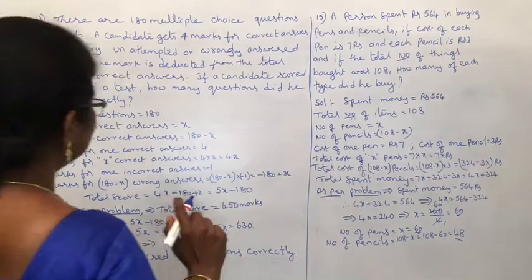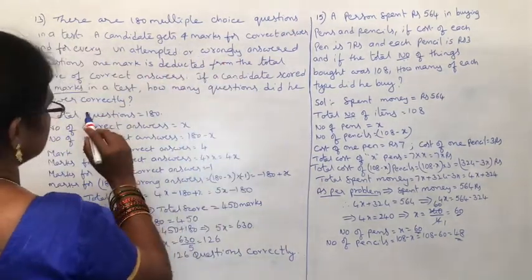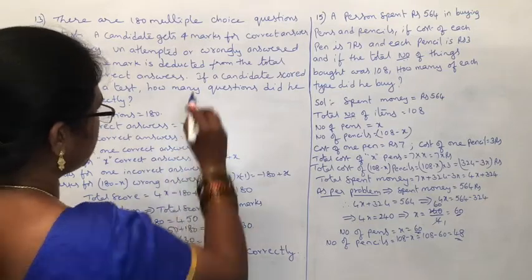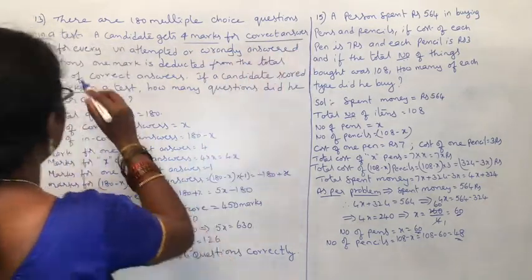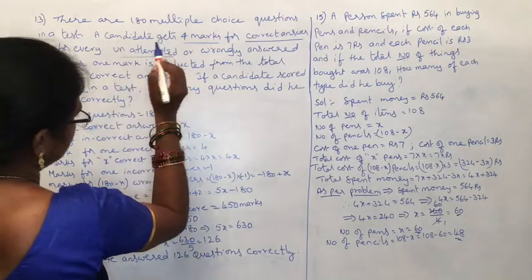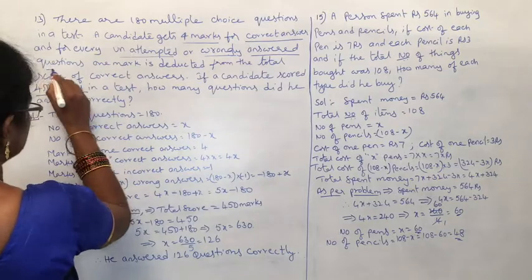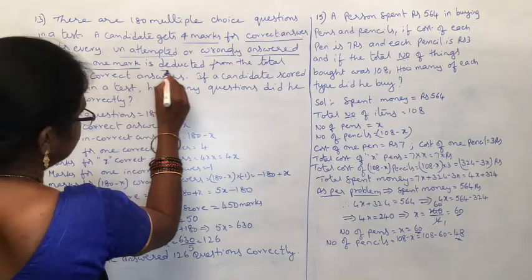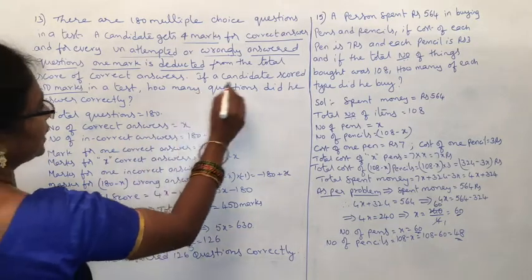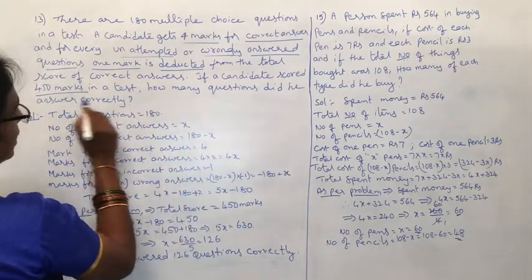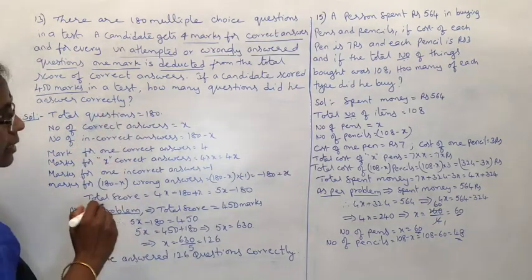Question 13: There are 180 multiple choice questions in a test. A candidate gets 4 marks for a correct answer, and for every unattempted or wrongly answered question, 1 mark is deducted from the total score of correct answers. If a candidate scored 450 marks in the test, how many questions did he answer correctly?